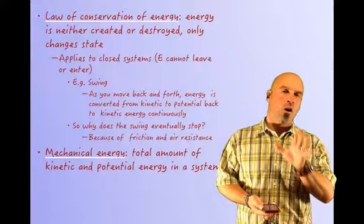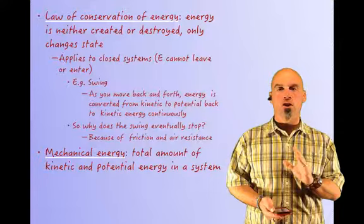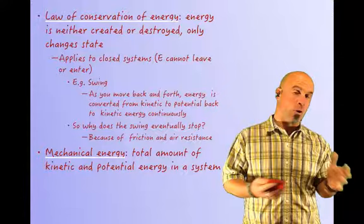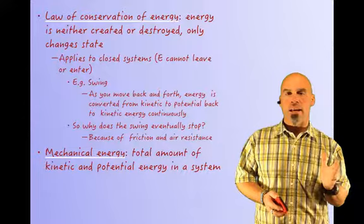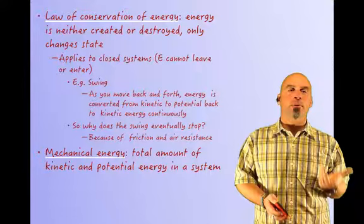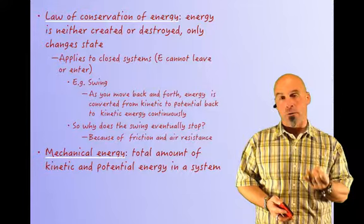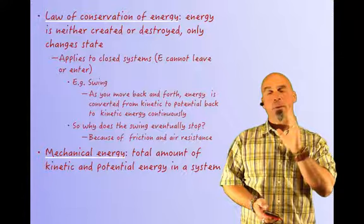Now let's talk about the law of conservation of energy. This is the idea that energy is neither created nor destroyed — it only changes state. This applies to a closed system where energy cannot leave or enter. A swing is a great example of conservation of energy. As you move back and forth, the energy is converted from kinetic to potential and back to kinetic, continuously. You may ask: why does the swing eventually stop? Because technically this is not a closed system — we have friction and air resistance. Without friction and air resistance, that swing would keep converting potential to kinetic and kinetic to potential energy forever.